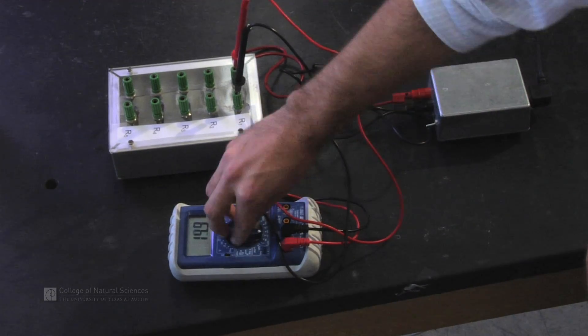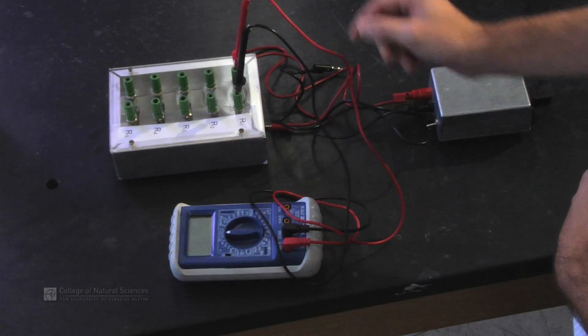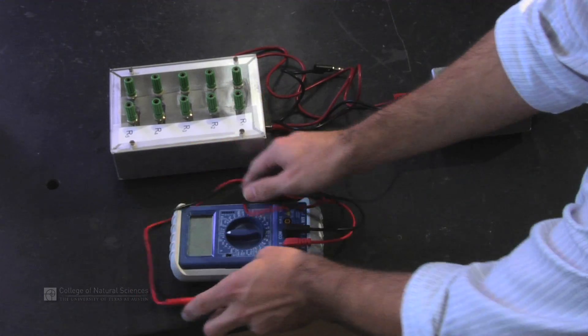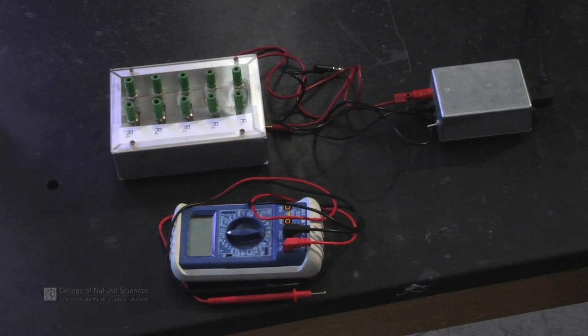Again, when we're done, turn the multimeter off, disconnect, and put everything in your box so you can return it to the supply window.